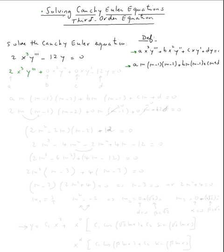So 2x³y''' + 0x²y'' + 0xy' - 12y = 0. This is how we know a, b, c, and d.